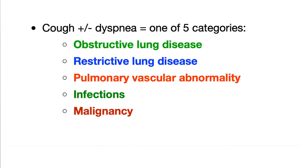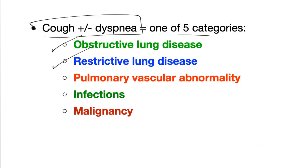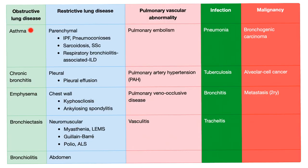Your typical lung patient has cough and dyspnea, and you have one of five categories to choose from: obstructive lung disease, restrictive lung disease, pulmonary vascular abnormality, infections, or malignancy. Here are the obstructive lung diseases: bronchitis, asthma, chronic bronchitis, emphysema, bronchiectasis, and bronchiolitis — which is today's topic.